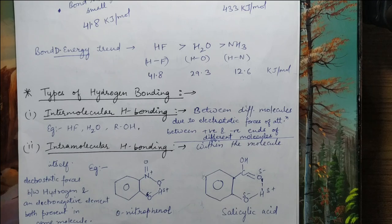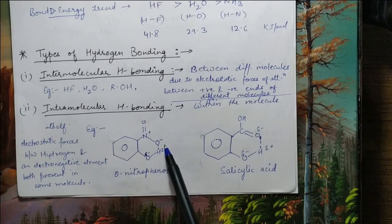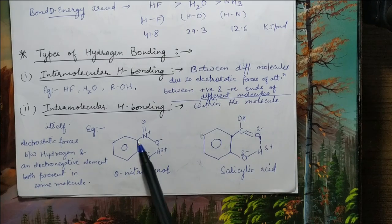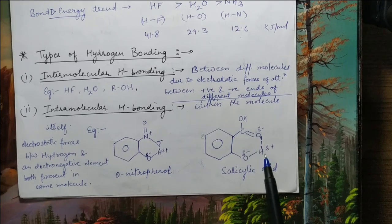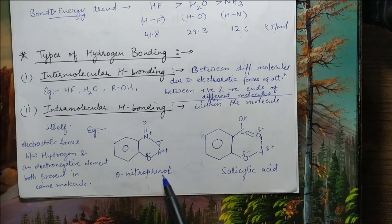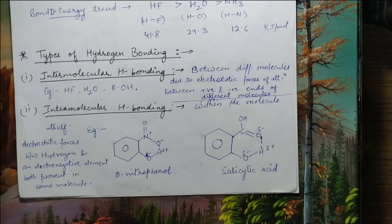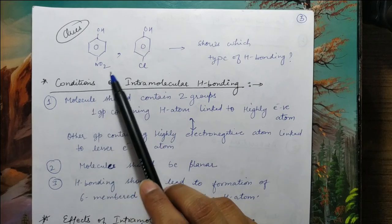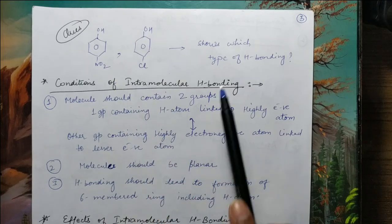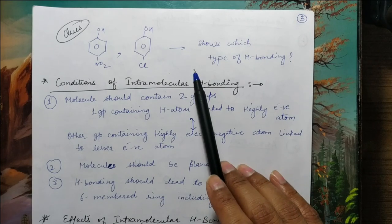The second type is intramolecular hydrogen bonding. In this, hydrogen bonding is created within the same molecule. As you can see in ortho-nitrophenol — there is a nitro group and at its ortho position there is an OH group (phenol's OH). Between this oxygen and this hydrogen, hydrogen bonding is created. Similarly in salicylic acid — there is a COOH group and an OH group. So within the same molecule, if an electronegative element is present at one position and hydrogen is at its ortho position, hydrogen bonding is created within the molecule.